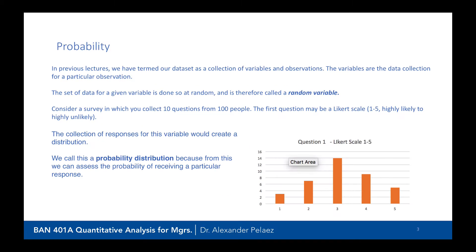In previous lectures, we've termed our data set as a collection of variables and observations. The variables are the data collected for particular observations. When we have a set of data for a given variable, it's usually collected at random, and it should be. Consider a questionnaire where we ask a hundred or a thousand people a set of questions — each question's responses will have a distribution, making it a random variable.